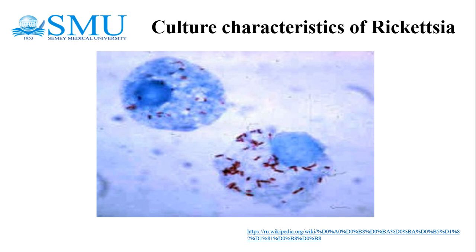The Mooser reaction: specimen is inoculated intraperitoneally into male guinea pigs. Changes observed in the animal over three to four weeks vary among rickettsial species. Rickettsia rickettsii produces scrotal necrosis. Rickettsia prowazekii produces only fever without testicular inflammation. Rickettsia typhi and Rickettsia conorii produce fever and a positive tunica reaction — testicular inflammation.